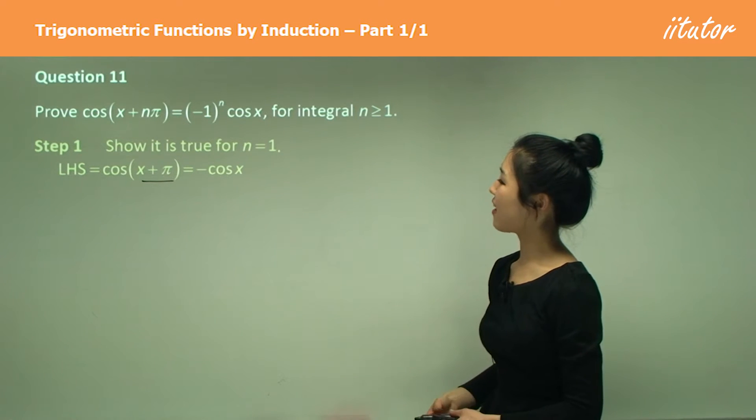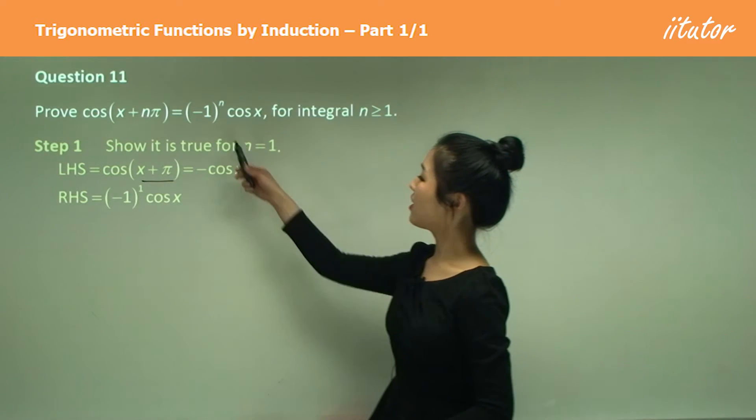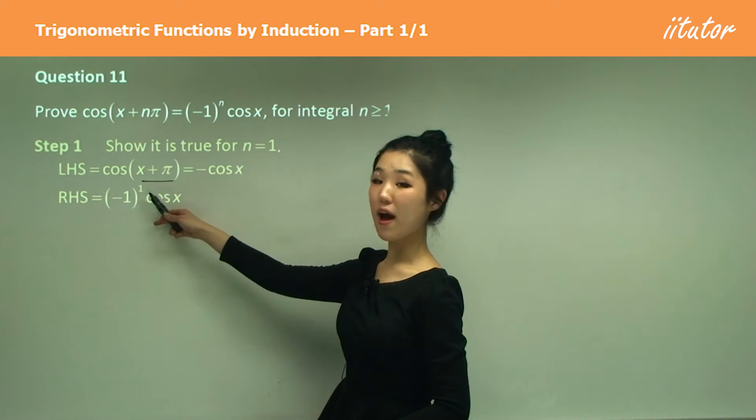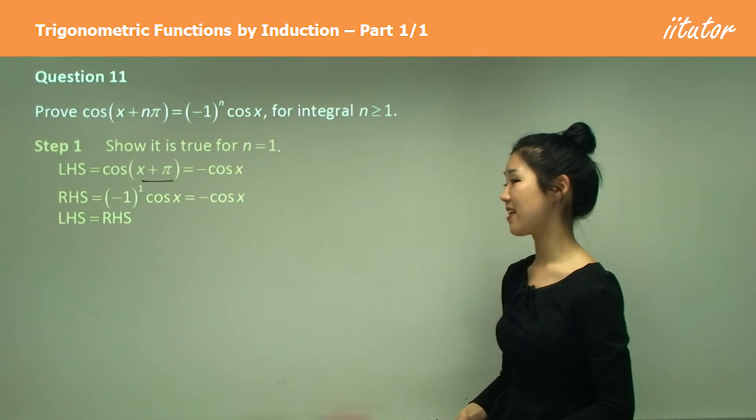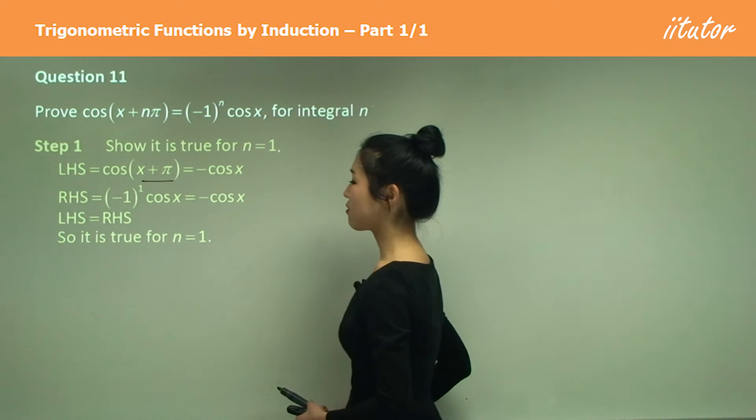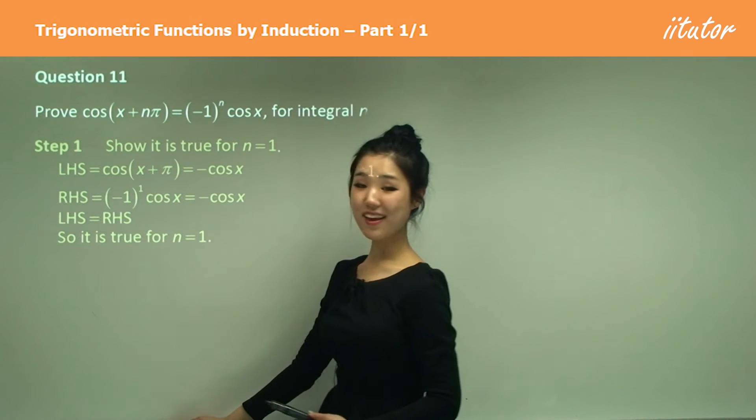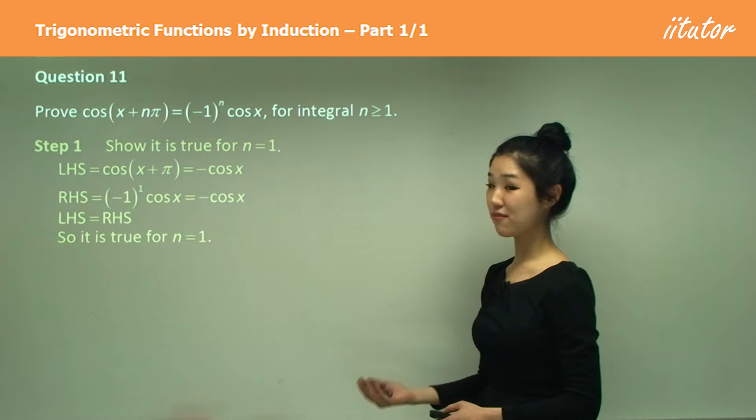And now let's do the right hand side. The right hand side is simply negative 1 to the power of 1 cos x, which is just negative cos x. So I can clearly see that left hand side is right hand side. So we've proved it for n equals to 1. Okay, so that was step 1. Make sure you know your trig functions.